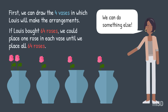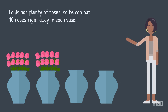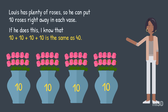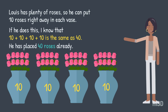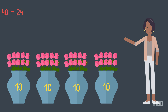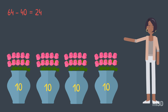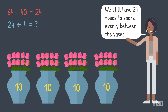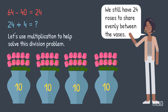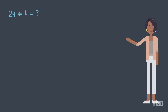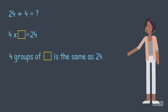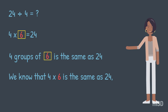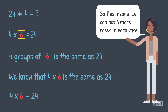We can do something else. Louis has plenty of roses, so he can put 10 roses right away in each vase. If he does this, 10 plus 10 plus 10 plus 10 is the same as 40. He has placed 40 roses already. Now, 64 minus 40 is 24. We still have 24 roses to share evenly between the vases — 24 divided by 4. So let's use multiplication to help solve this division problem: 4 times what equals 24? We know that 4 times 6 is the same as 24, so we can put 6 more roses in each vase.